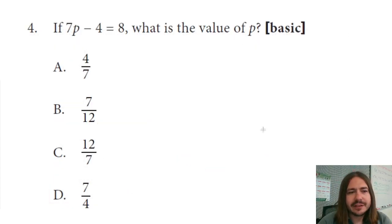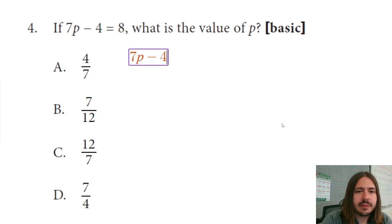Number four says, if 7P minus 4 equals 8, then what is the value of P? So here, we're just solving a linear equation. We have 7P minus 4 equals 8. And there's no distributive property to do here, no like terms to combine. So we're just going to move on to our properties of equality.